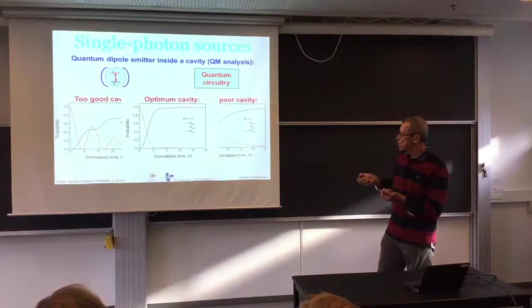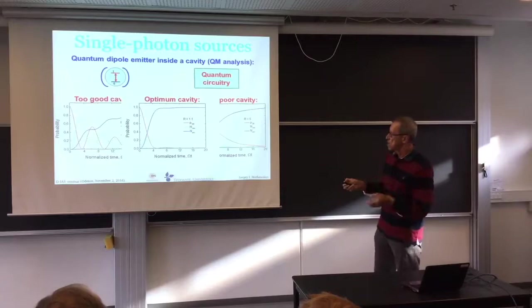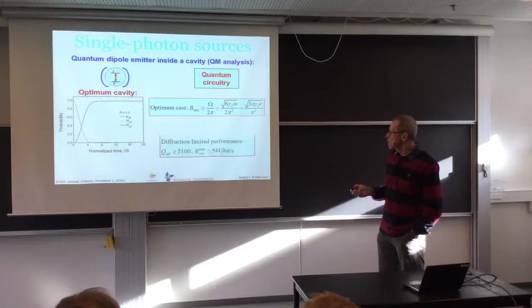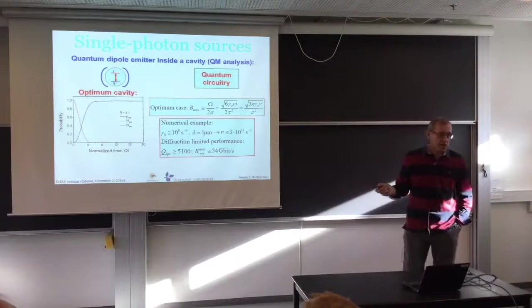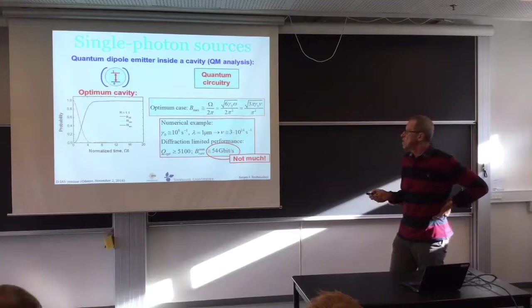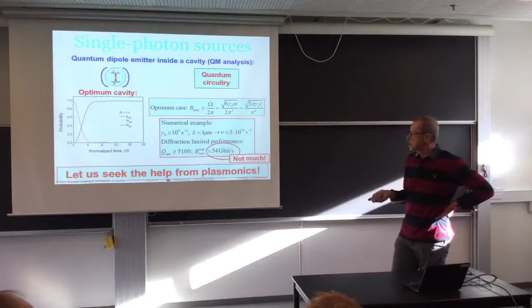If you put it into numbers, the limit for dielectric cavities is 54 gigabits per second — not much, not terabits per second. So this is why we must seek help from plasmonics. In plasmonics we don't have a cavity, but we have nanoparticles that resonate — when you shine light on gold or silver, they scatter particular wavelengths, acting as resonators. These give the characteristic colors of gold and silver particles, related to the variation of the refractive index with frequency — so-called localized plasmons.